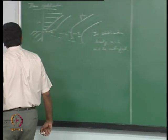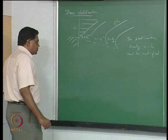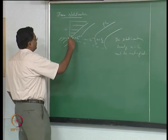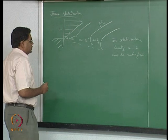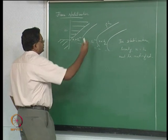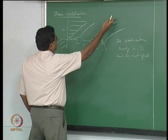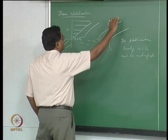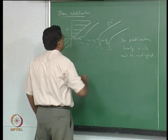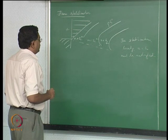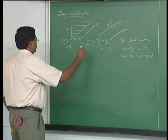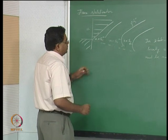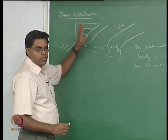We have been looking at how flame stabilization happens. Essentially, you have a linearly increasing velocity profile, but you also have a flame speed that continues to decrease from SL0. It decreases because of heat loss to the burner as one effect, and the other effect is dilution from the ambient.